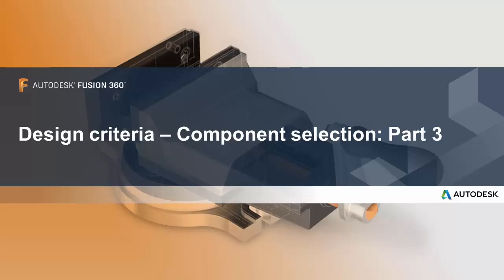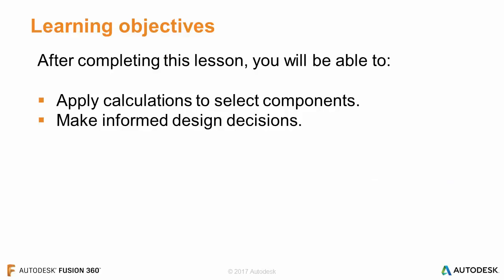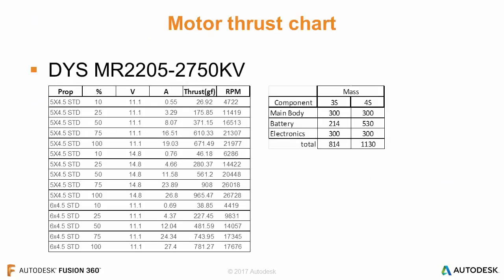In this design criteria lesson we're going to carry on with part 3 of our component selection. After completing this lesson you'll be able to apply calculations to select components and make informed design decisions. In this lesson we're going to be focusing on the amount of thrust provided by our motor and how our battery choices are going to affect both the lift as well as the flight time.